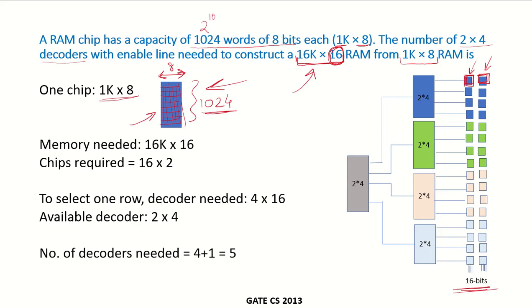And how many chips would be required? The memory that is needed is 16K by 16. The number of chips that would be required is, each chip over here is 1024, 1K. That means 16 chips, and for these 16 bits, we would require 2 bits, 2 chips in each row.